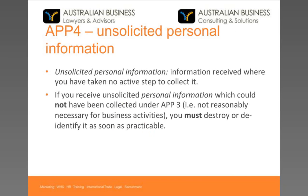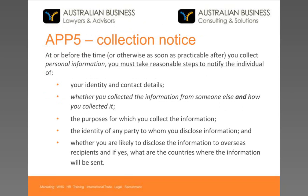APP4 regards dealing with unsolicited information — ones where you did not take a step to collect it, for example where the information was passed on to you without you requesting it. The guiding principle is that if you could not have collected it under APP3 — if that unsolicited information was not necessary for your business activities — then you cannot keep it. This APP requires you to destroy or de-identify that information as soon as you can, such as an unsolicited résumé in a recruitment scenario.